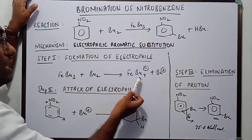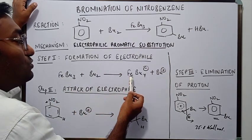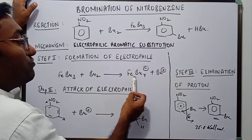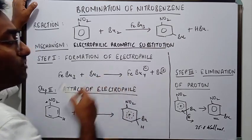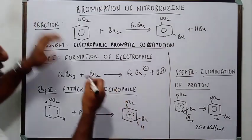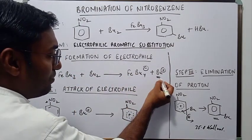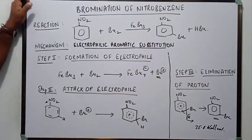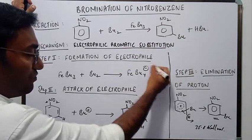So here Br donates electron to the empty orbitals of Fe leading to the formation of FeBr4-. And the electrophile which is Br+. So now we have generated the electrophile.